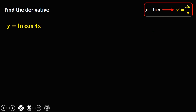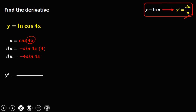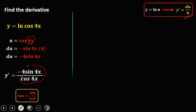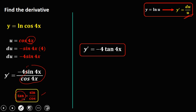For y equals ln(cosine 4x), u is equal to cosine 4x. The derivative of cosine is negative sine, so du is negative sine(4x) times the derivative of 4x, times 4 — so du equals negative 4·sin(4x). Therefore y prime equals negative 4·sin(4x) over cos(4x). Using the identity that tangent equals sine over cosine, y prime equals negative 4·tan(4x). So this is now the derivative.